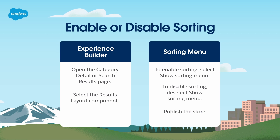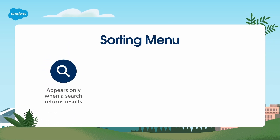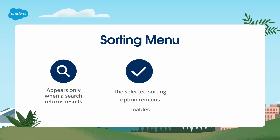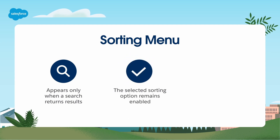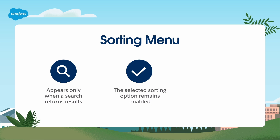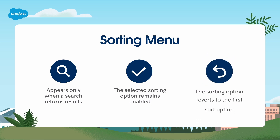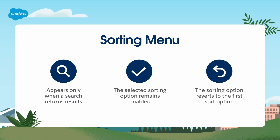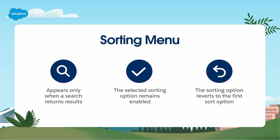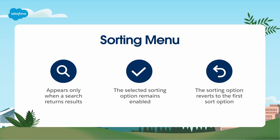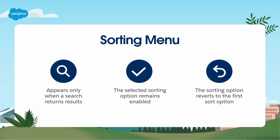The sorting menu appears only when a search returns results. The selected sorting option remains enabled for the current search results unless you change it. When you issue another search request, the sorting option reverts to the first sort option in the sorting menu. To make the most of the sorting capability, you first need to create sorting rules based on the available products and product attributes. This allows your buyers to arrange results in your search and category pages as they'd like.